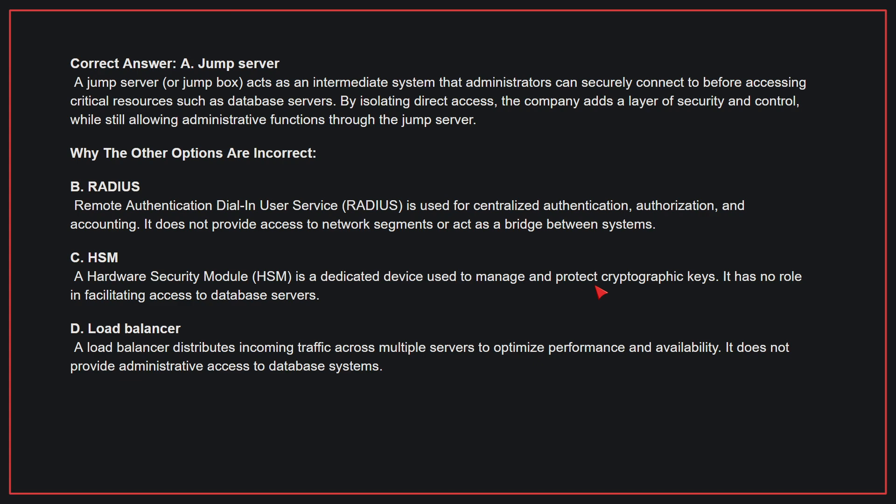Why the other options are incorrect? B: RADIUS. RADIUS is used for centralized authentication, authorization, and accounting. It does not provide access to network segments or act as a bridge between systems. C: HSM. An HSM is a dedicated device used to manage and protect cryptographic keys. It has no role in facilitating access to database servers. D: Load balancer. A load balancer distributes incoming traffic across multiple servers to optimize performance and availability. It does not provide administrative access to database systems.